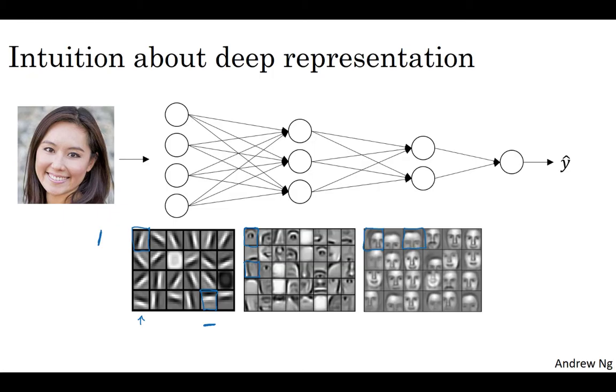So intuitively, you can think of the earlier layers of a neural network as detecting simpler functions like edges, and then composing them together in the later layers of a neural network, so that they can learn more and more complex functions. These visualizations will make more sense when we talk about convolutional nets. And one technical detail of this visualization, the edge detectors are looking in relatively small areas of an image, maybe very small regions like that. And then the facial detectors can look at maybe much larger areas of the image. But the main intuition you take away from this is just finding simpler things like edges, and then building them up, composing them together to detect more complex things like an eye or nose, and then composing those together to find even more complex things. And this type of simple to complex hierarchical representation or compositional representation applies in other types of data than images and face recognition as well.